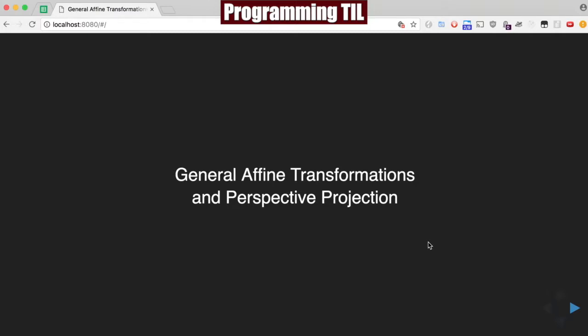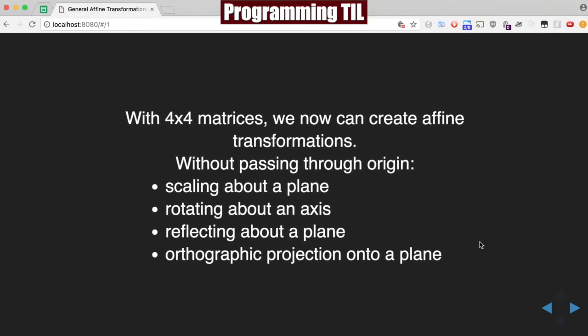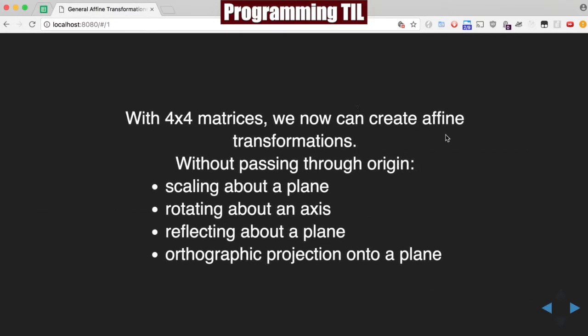We're going to be looking at general affine transformations and the perspective projection. Now that we have 4x4 matrices, we can create affine transformations, and now we can do a lot that we weren't able to do before. Without passing through the origin, we can now scale about a plane, rotate about an axis, reflect about a plane, and do orthographic projection onto a plane. So a lot of new things that don't need to go through the origin anymore.